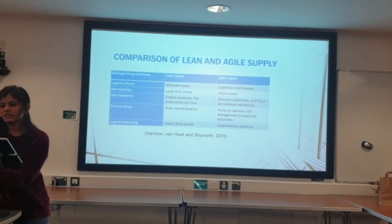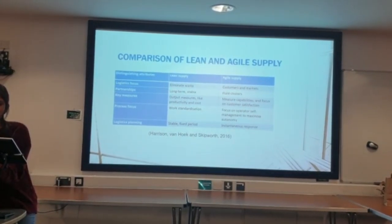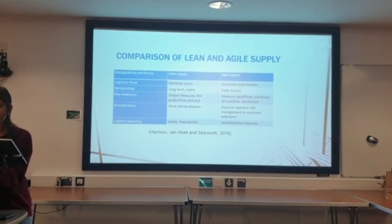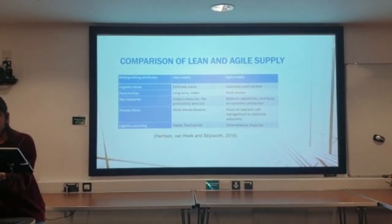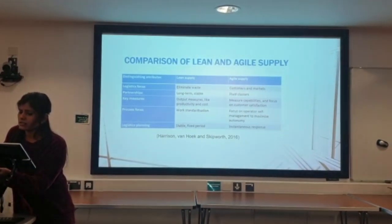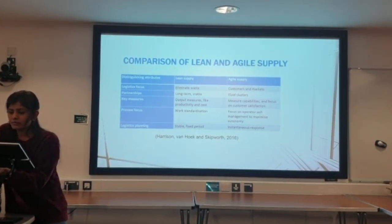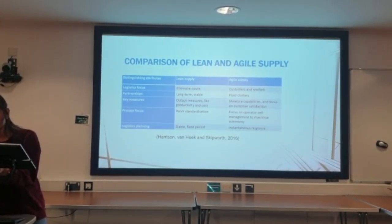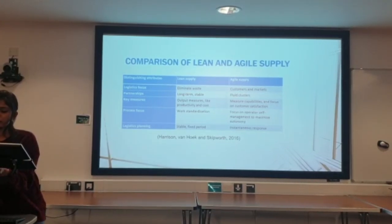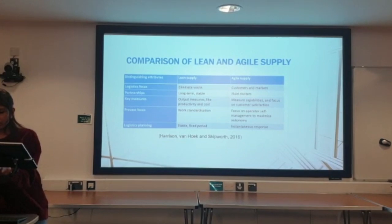Comparison of lean and agile: when it comes to lean supply chain and logistics focus, it's more about eliminating waste and reducing costs, without having too many metrics. Whereas agile is more about flexibility and adapting to market changes in order to focus on customer demands. When it comes to partnership, lean favours long-term commitment and stability, whereas agile puts people at the centre.